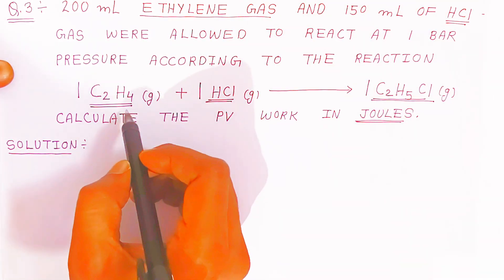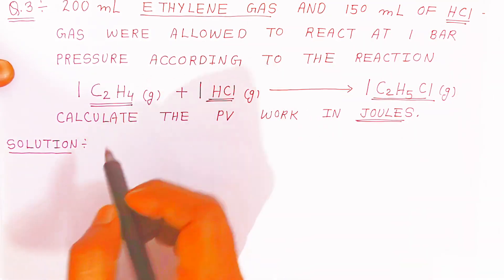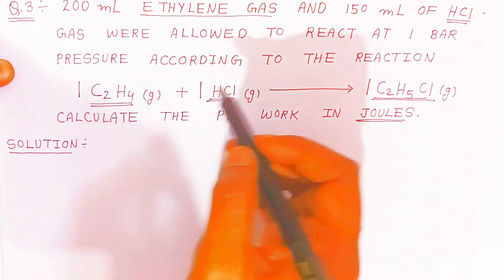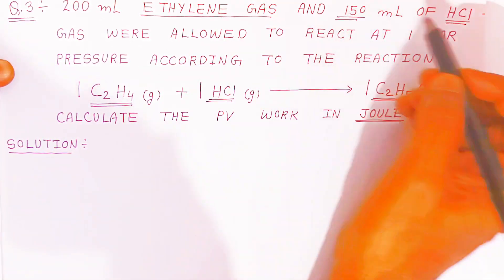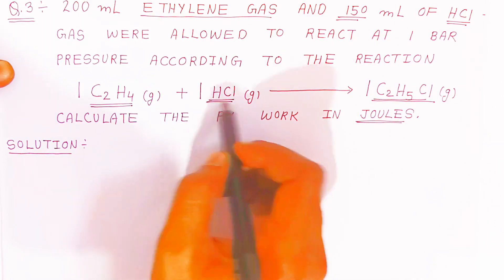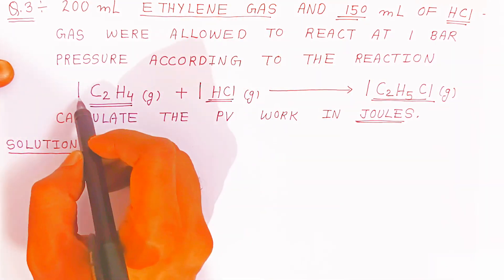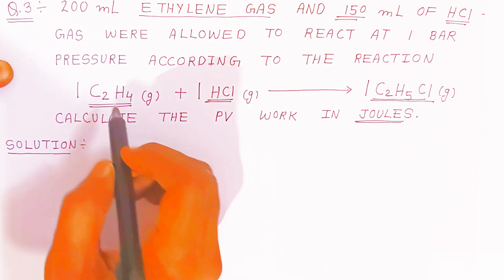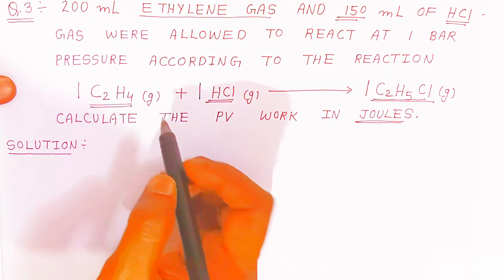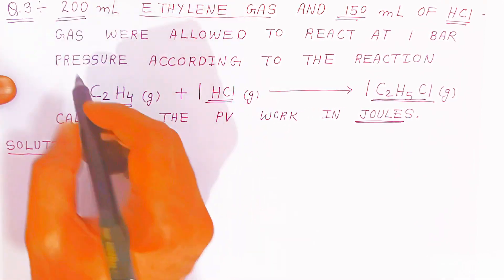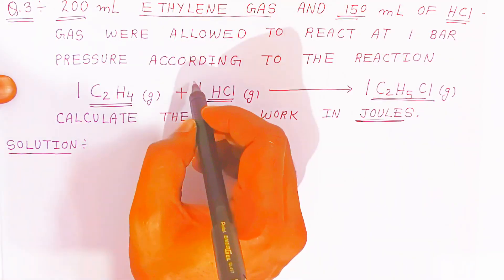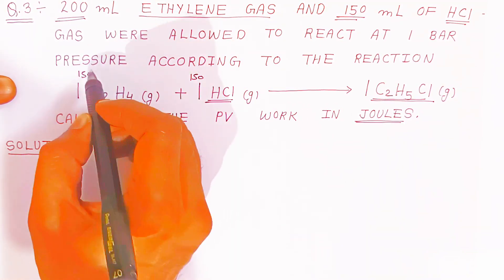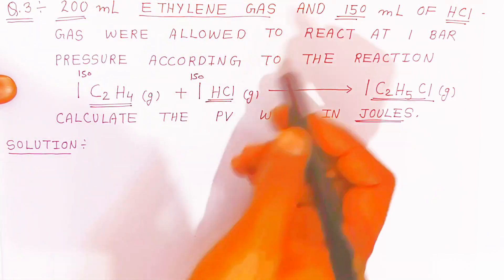According to this reaction, you have to calculate the pressure-volume type of work. Now, 150 ml of SCl will always react with 150 ml of ethylene gas. Out of the 200 ml of ethylene, only 150 ml will be consumed. The remaining 50 ml will not react with SCl.